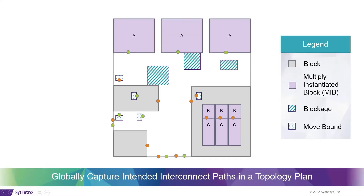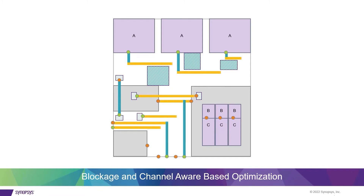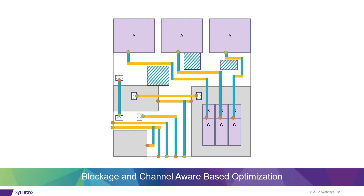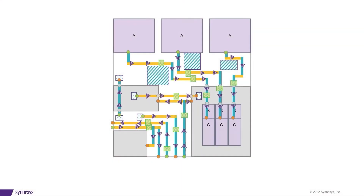Designers plan the routing topologies by creating topology plans, which capture the user's intention of how interconnections should be routed and buffered. TIP natively supports multi-level physical hierarchy and multiple instantiated blocks, which is important for AI designs. It automatically converts topology plans into detailed constraints and helps optimize and manage multiple topology plans. Feed-throughs and pins are created, virtual registers and repeaters are placed as needed. Early feedback and timing analysis are available after each major step to identify any floor plan or timing issues early in the planning process.